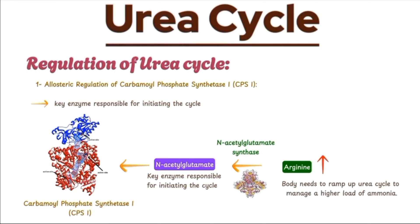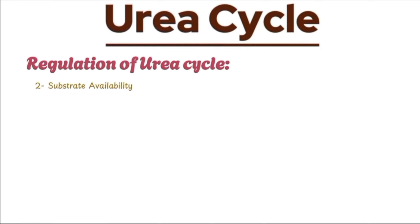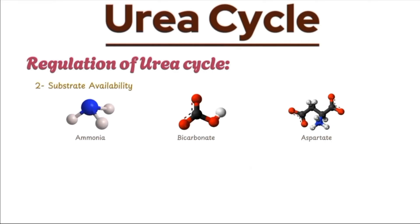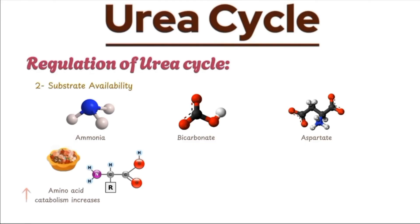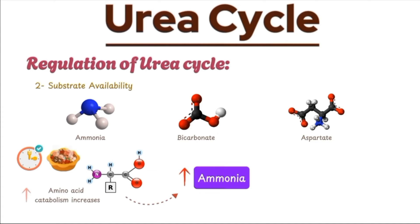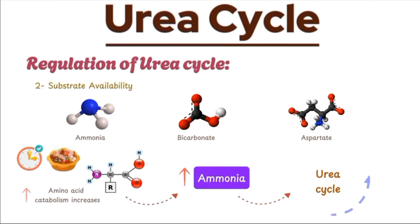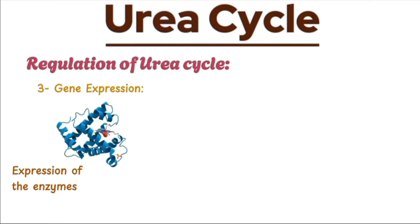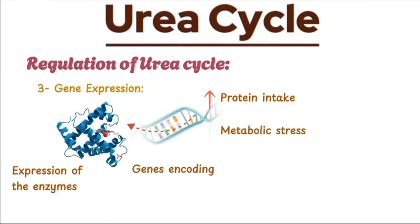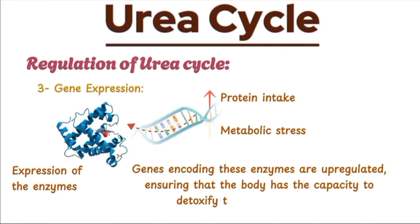Beyond enzyme activation, the urea cycle is also regulated by the availability of its substrates — ammonia, bicarbonate, and aspartate. When amino acid catabolism increases, such as during a high-protein diet or prolonged fasting, more ammonia is produced, naturally upregulating the urea cycle. This ensures that the cycle can keep pace with the body's metabolic demands. In addition, the body can adjust the activity of the urea cycle over time by regulating the expression of the enzymes involved. During periods of high-protein intake or metabolic stress, the genes encoding these enzymes are upregulated, ensuring that the body has the capacity to detoxify the increased ammonia.